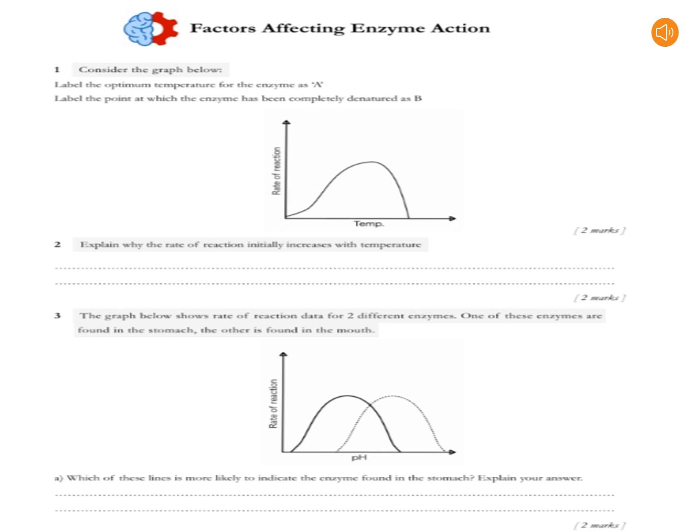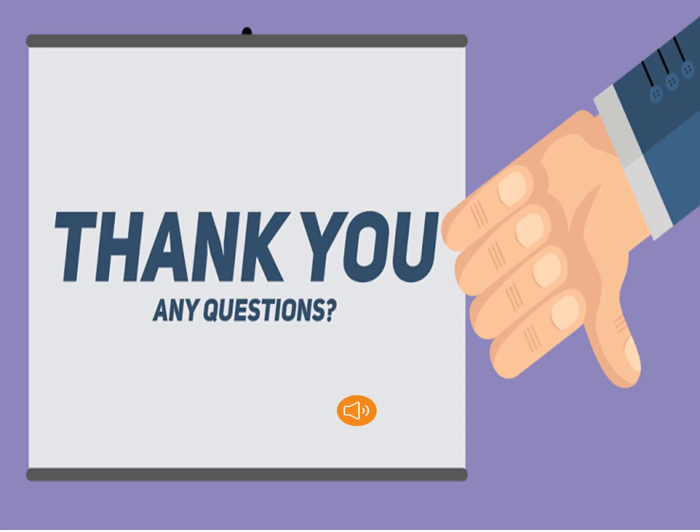Question number 3: The graph below shows rate of reaction data for two different enzymes — one found in the stomach and the other found in the intestine. You have to answer which of these lines is more likely to indicate the enzyme found in the stomach, and explain your answer. Dear students, submit your assignment on time. If you have any questions, then ask. Thank you and have a nice day.